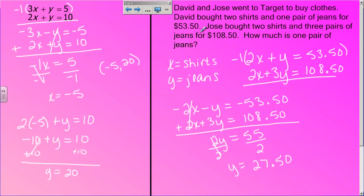And if I divide both sides by 2, I will get that y equals $27.50. Now go back to the problem. The question says, how much is one pair of jeans? It does not ask for how much a pair of shirts is. And if you look at my let statements, I said y equal jeans. So right here, one pair of jeans is $27.50.